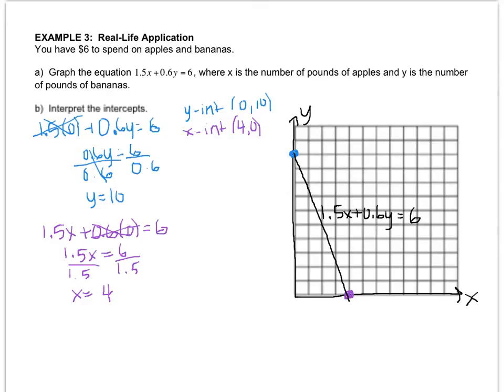All right, so if you have anything wrong, I want you to fix it. Don't leave wrong work on your paper. So if you have one of the intercepts wrong, fix it. If your work is wrong, fix it. If you didn't put yourself in quadrant 1, if you put yourself in all four quadrants, fix it. If you extended your line into the negatives, fix it. If you didn't label your line, fix it. Do you understand what I want you to do? Fix it.